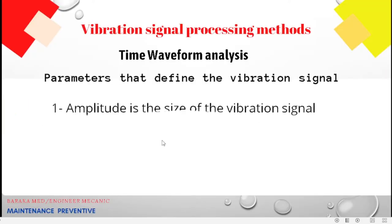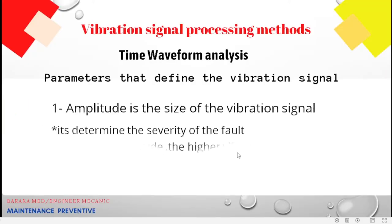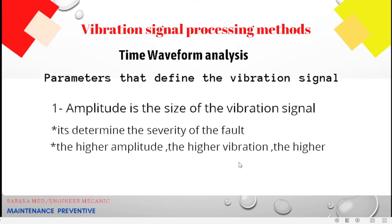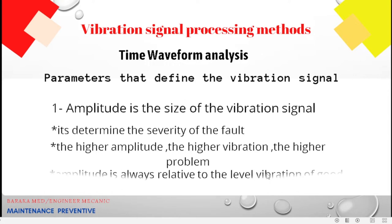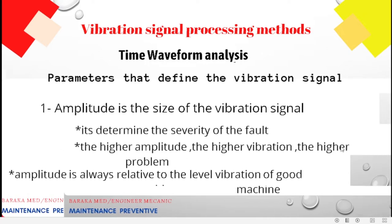The vibration signal amplitude represents the size of the vibration and the severity of the fault. The higher the amplitude, the higher the vibration and the greater the problem. Amplitude is always evaluated relative to the vibration level of a known good machine.